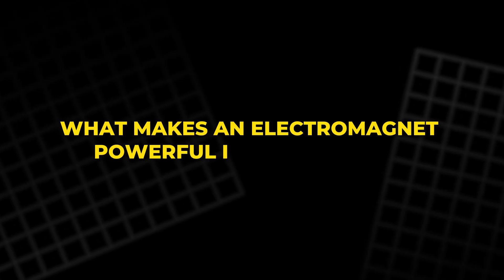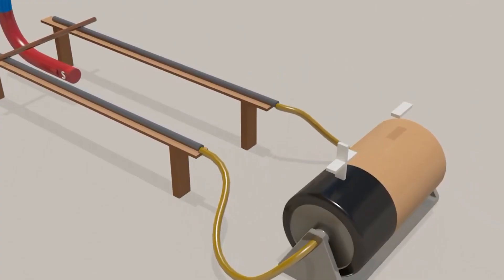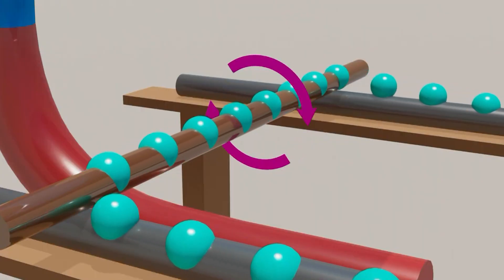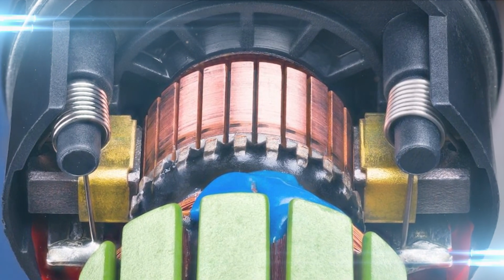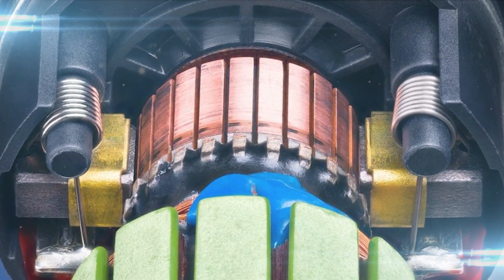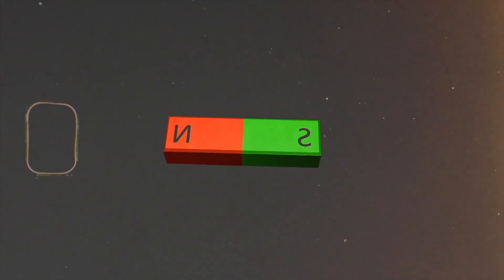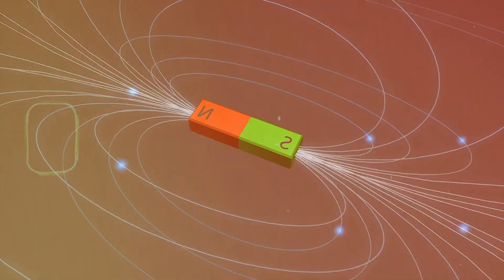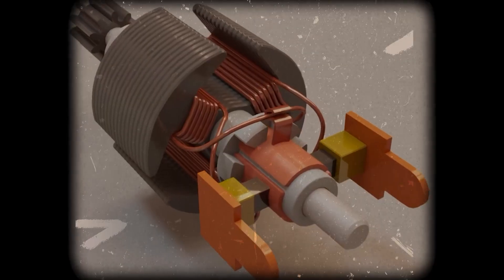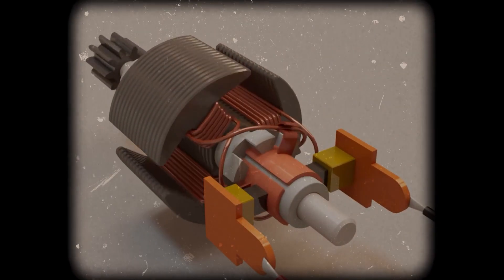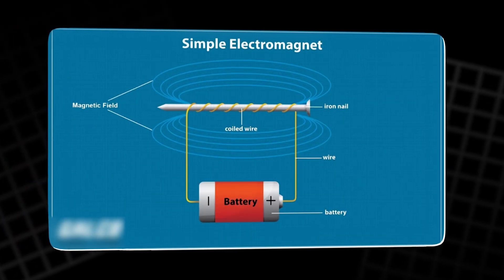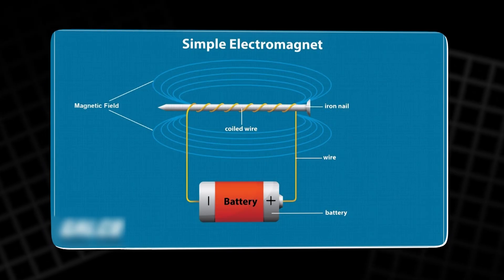What makes an electromagnet powerful is its flexibility. It can be switched on or off as easily as turning the battery connection on or off. More importantly, by reversing the flow of current, its poles flip. North becomes south, and south becomes north. This reversal of polarity is crucial because it is precisely what keeps motors spinning. A permanent magnet never changes, but an electromagnet can be commanded to alternate endlessly.